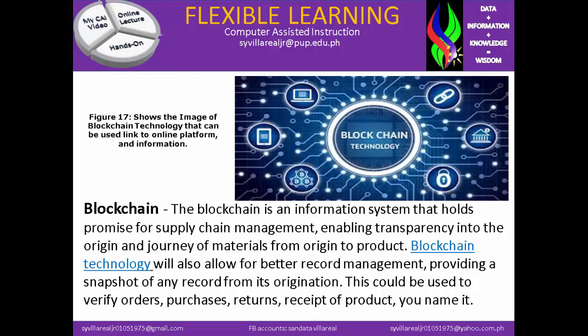Next is blockchain. Figure 17 shows the image of blockchain technology that can be used to link online platforms and information. Blockchain is an information system that holds promise for supply chain management, enabling transparency to the origin and journey of materials from origin to product. Blockchain technology will also allow for better record management, providing a snapshot of any record from its origination. This could be used to verify orders, purchases, returns, and receipt of product.